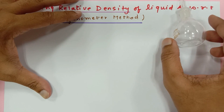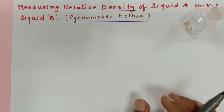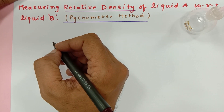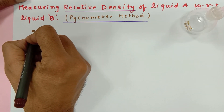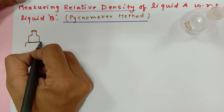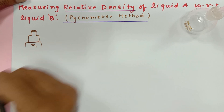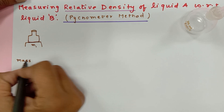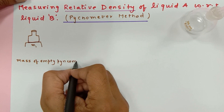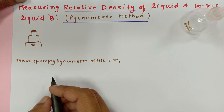To find the relative density of A with respect to B, I also require a digital weighing machine that shows the mass of liquids in grams. I take the pycnometer bottle and keep it on the digital balance to measure the mass of the empty pycnometer bottle. I call this mass M1 — the mass of the empty pycnometer bottle — and let's assume M1 is 10 grams.